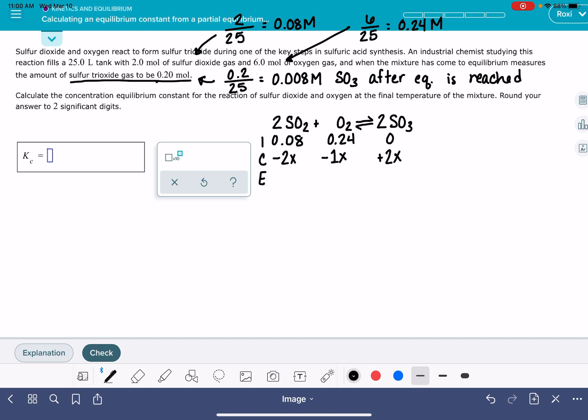And then at equilibrium, we just do the math in the column. So at equilibrium, we have 0.08 minus 2x of the SO2. We have 0.24 minus x of the O2. And we have 2x of the SO3. And our goal is to calculate the equilibrium constant k from this right here. But we don't know what x is. And we also don't know what k is, which makes this problem a little different than the ones we've done in the past.